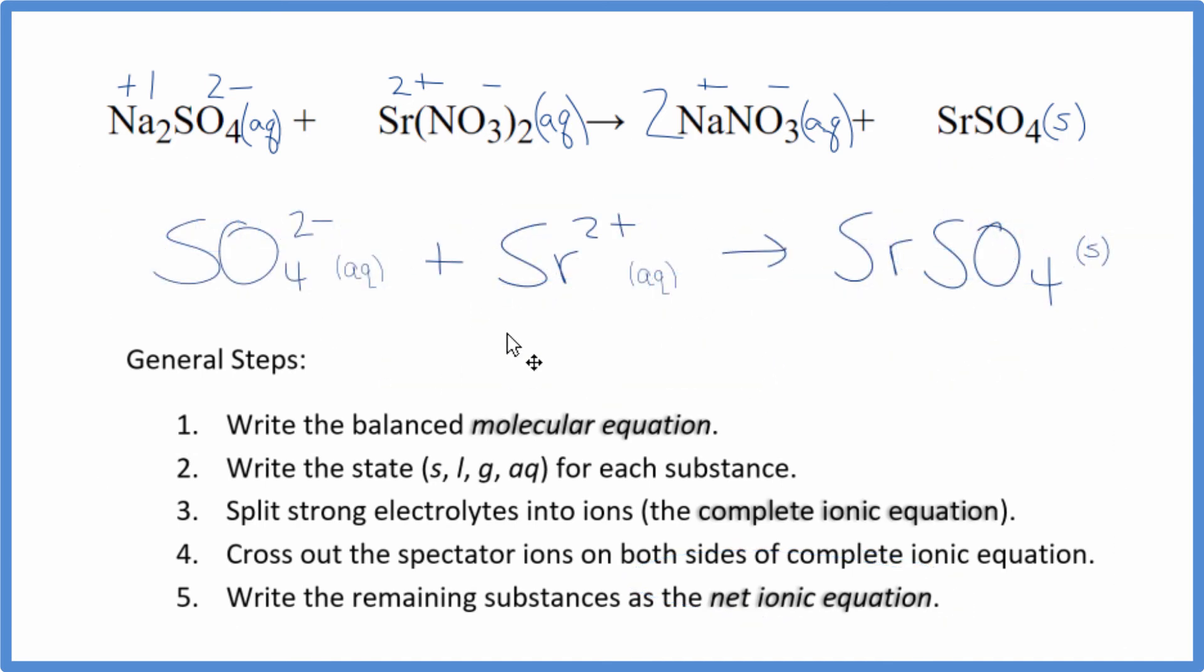So this is the balanced net ionic equation for Na2SO4 plus Sr(NO3)2. You can see charge is balanced. We have 2 minus and 2 plus, that gives us a net charge of zero. And then over here, this is a neutral compound, so a net charge of zero. If you count the atoms up, they're balanced as well. Often you'll see the positive ion put first in net ionic equations. It doesn't really matter, it's the same thing. Maybe it looks a little bit nicer.